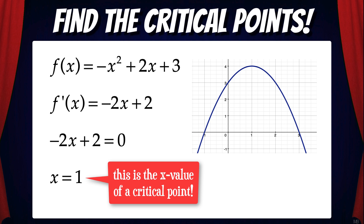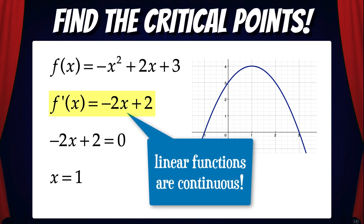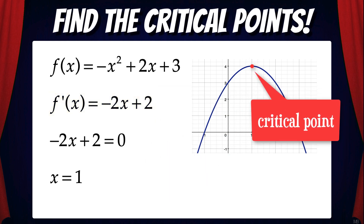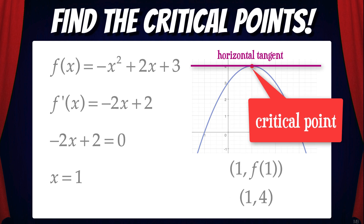That means x = 1 is an x-value of a critical point on this function. Now let's determine if there are any points where the derivative does not exist. Since f'(x) is a linear function and linear functions are continuous, f'(x) exists for all values of x. So we only have one critical point for this function, and that point is (1, f(1)), which is (1, 4). As you can see at the point (1, 4), the derivative of this function is zero — there's a horizontal tangent at (1, 4).